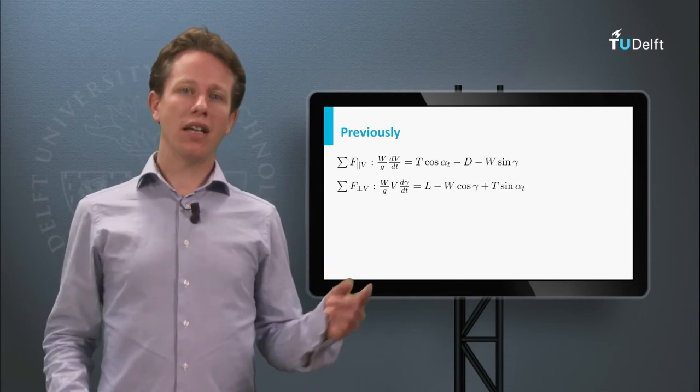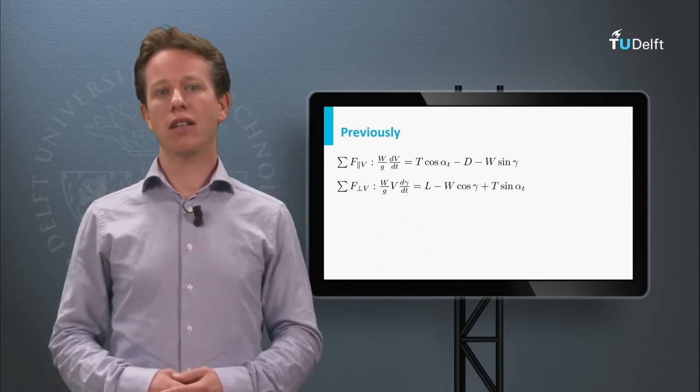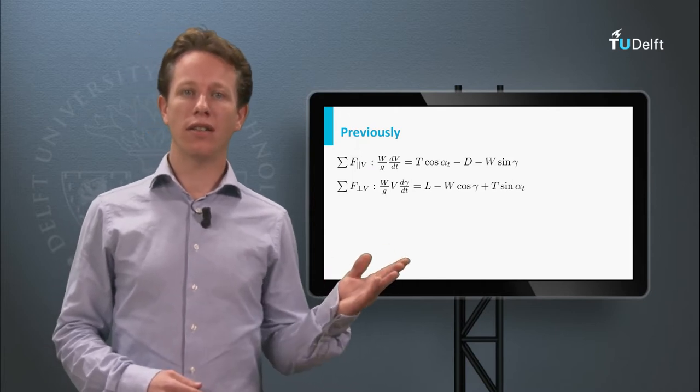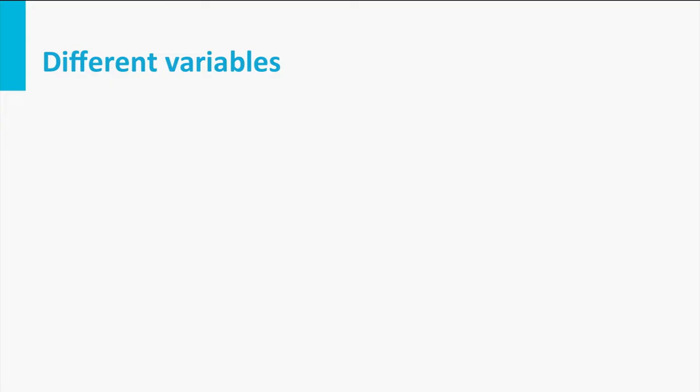We basically have two equations with many unknowns, which typically cannot be solved. But if you look closely at these equations there are actually three different types of variables. First being the time, t. We can call this an independent variable. During flight all variables can change as a function of time and the pilot does not have an influence on the time itself. It will keep on running no matter what we do.